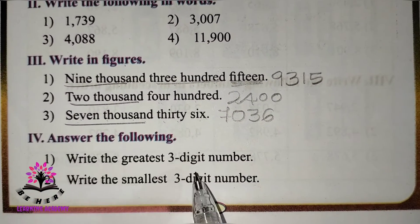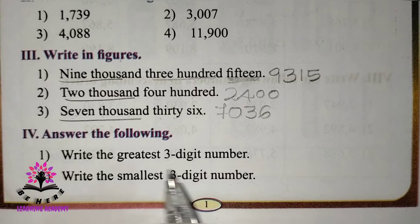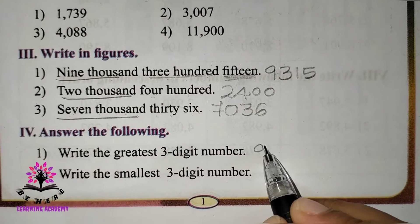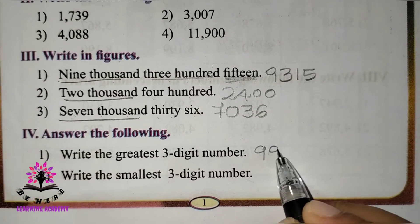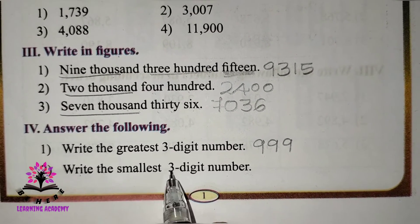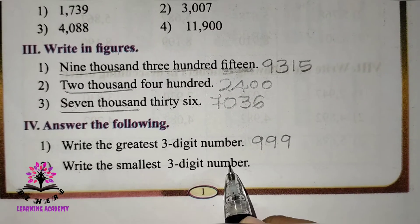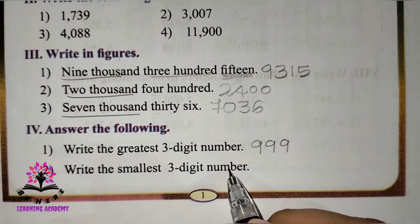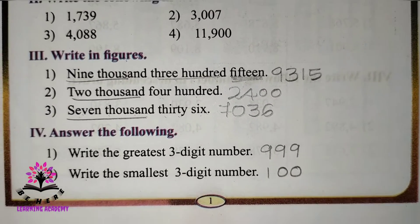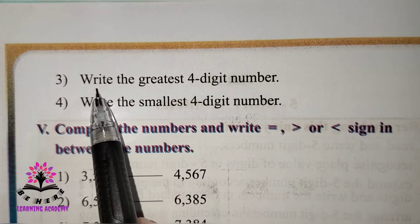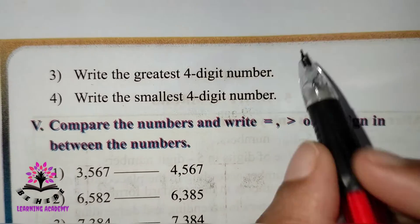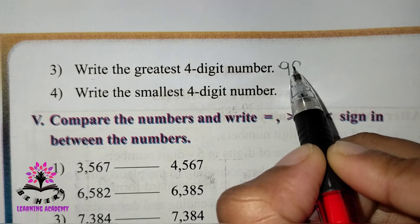Write the greatest three-digit number — it is 999. Write the smallest three-digit number — it is 100. Write the smallest four-digit number — it is 1,000.